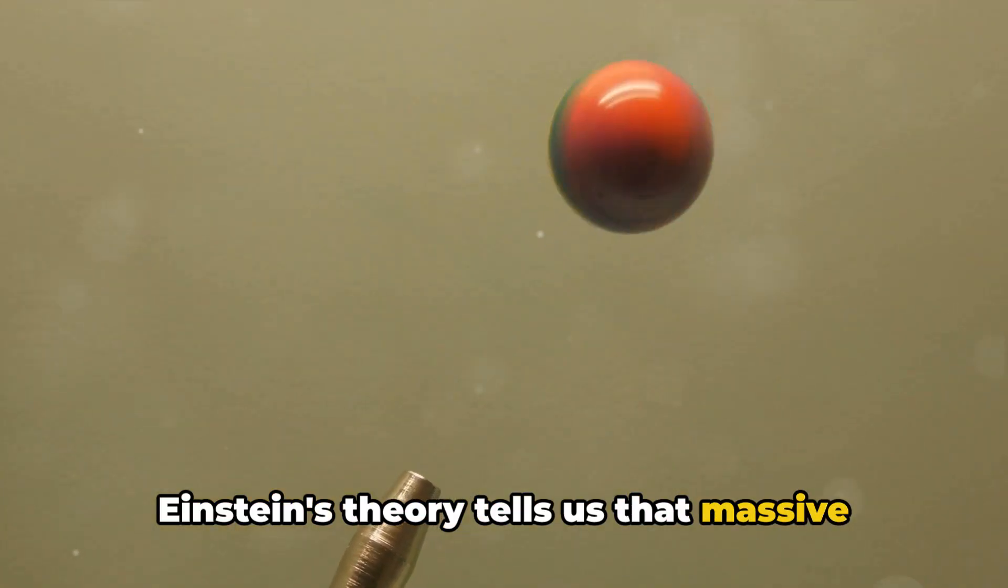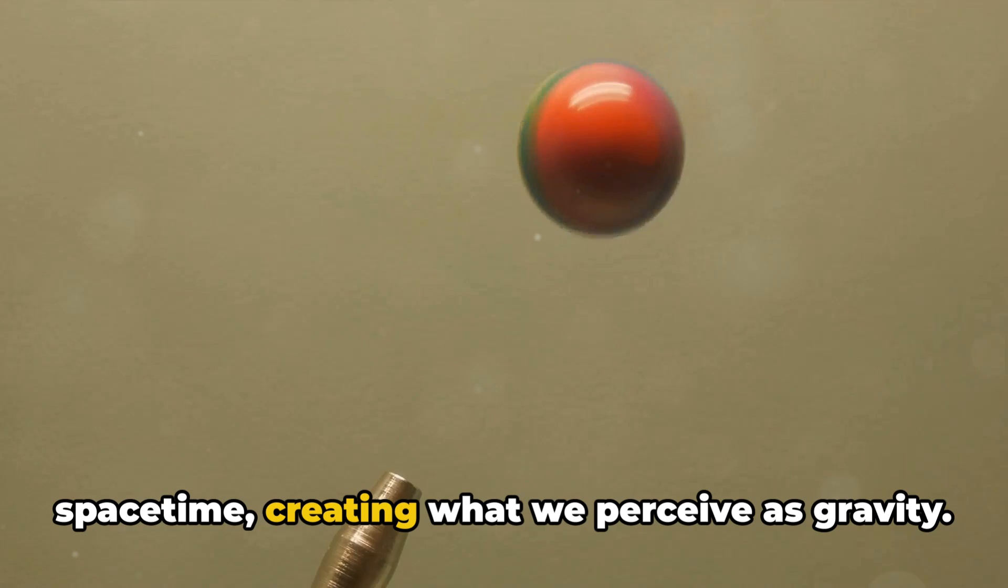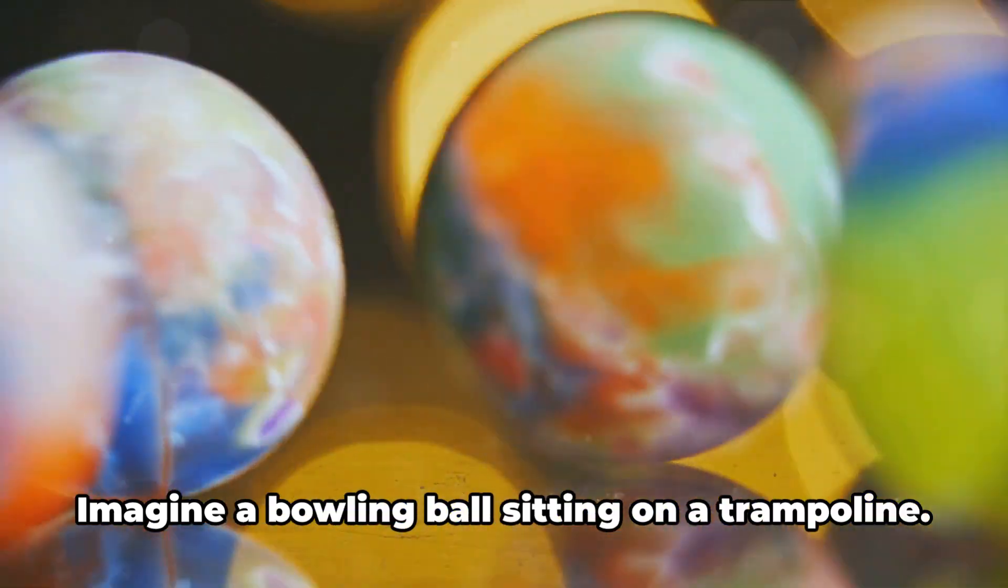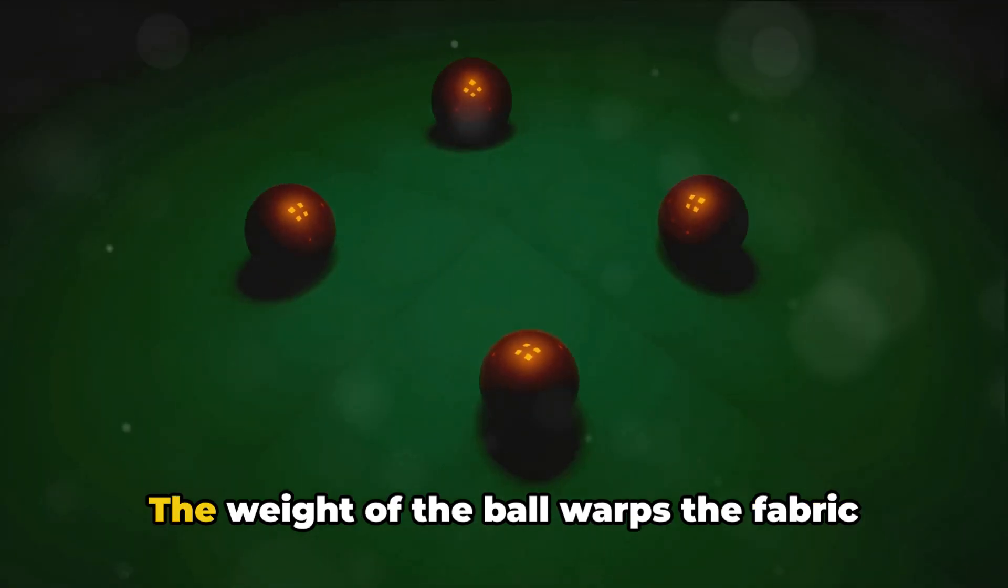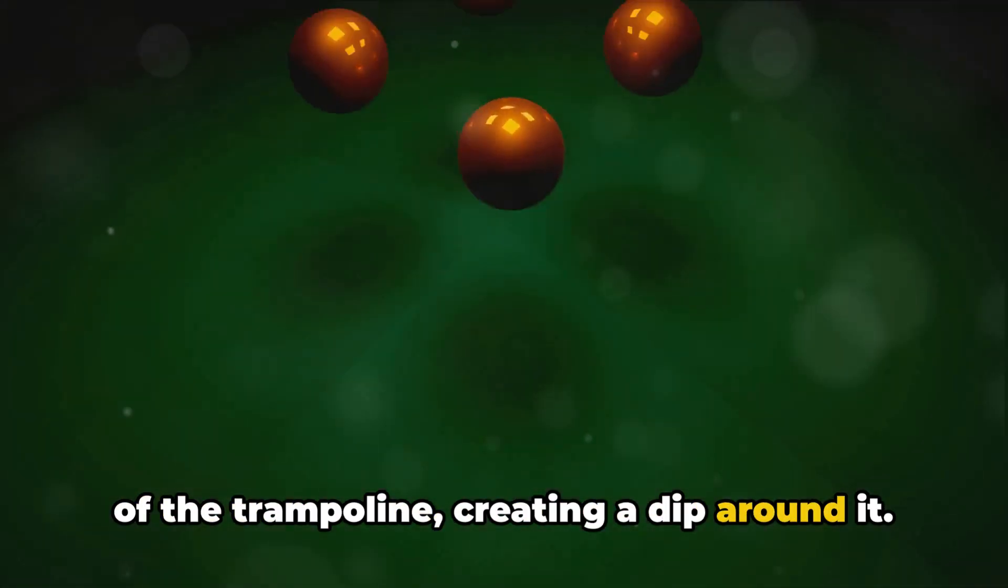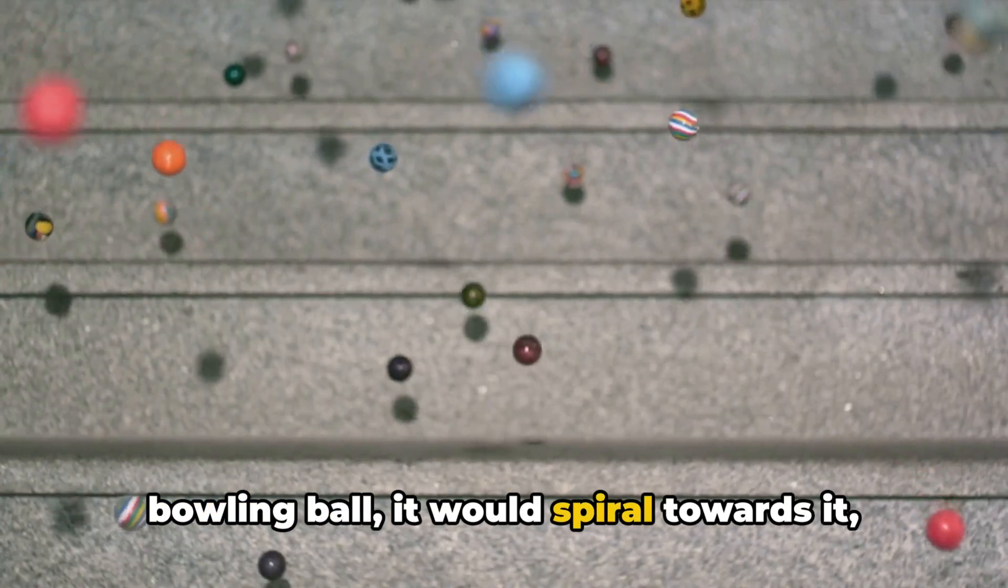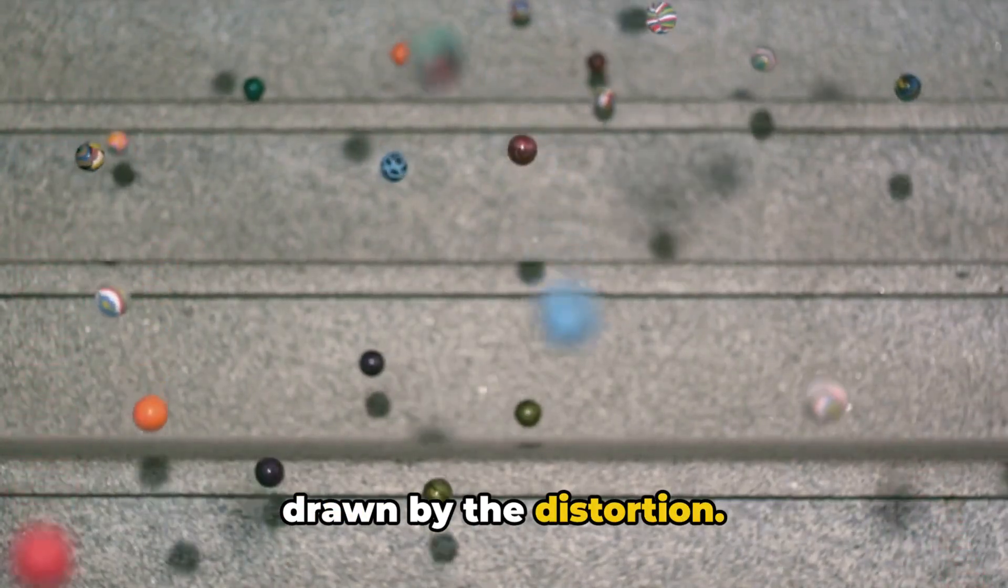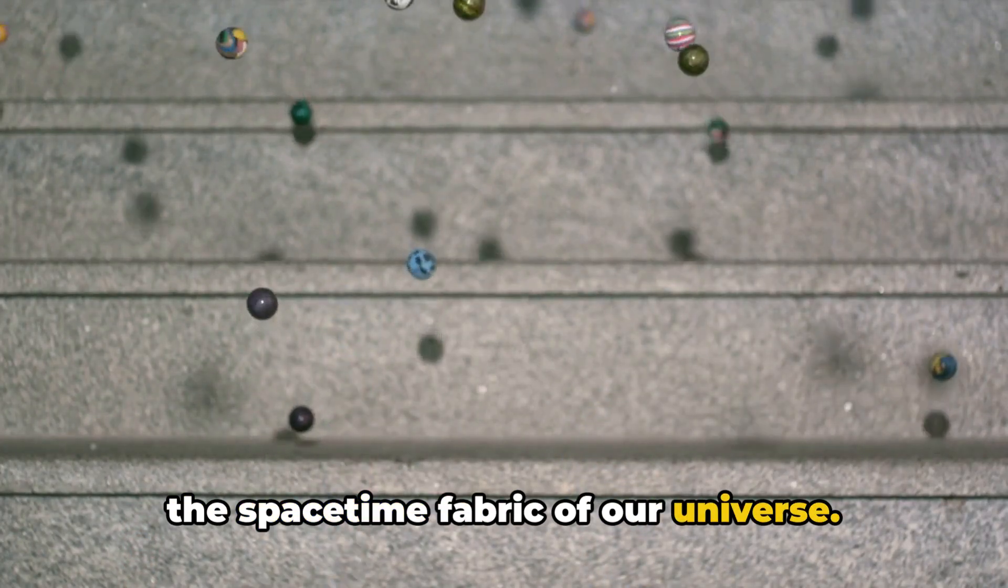Einstein's theory tells us that massive objects like stars and planets distort space-time, creating what we perceive as gravity. Imagine a bowling ball sitting on a trampoline. The weight of the ball warps the fabric of the trampoline, creating a dip around it. If you were to roll a marble near the bowling ball, it would spiral towards it, drawn by the distortion. That's essentially how gravity works in the space-time fabric of our universe.